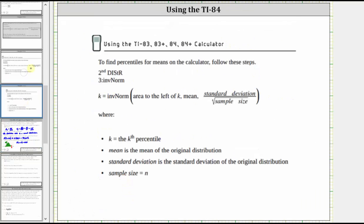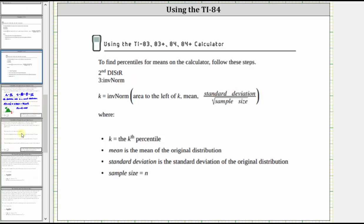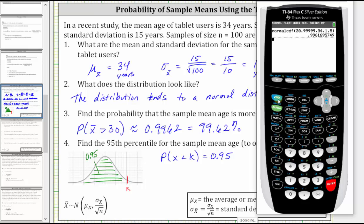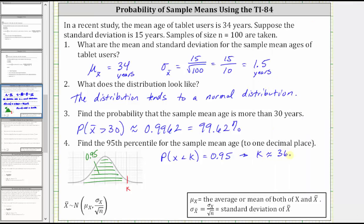And now to use the TI-84 to find k, the 95th percentile, we use the inverse norm function, enter the area to the left of k, the mean, and the sample mean standard deviation, which is the population standard deviation divided by the square root of the sample size, which we've already found. So going to the calculator, we press the second vars for the distribution menu, option three for inverse norm. Area to the left, we know is 0.95 for the 95th percentile. The mean is 34. And the sample mean standard deviation we know is 1.5. We're asked to round to one decimal place, which is approximately 36.5. So now we know the 95th percentile is approximately 36.5 years.